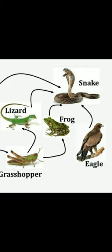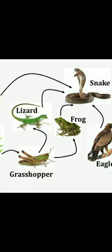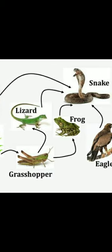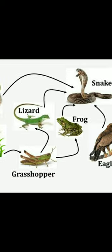An insect feeding upon the leaves of various plants can be the prey for many other organisms. An insect is the prey for many animals like frog, lizard, and grasshopper. If this is shown in a figure, it will indicate a web instead of a linear food chain — such an intricate network is called a food web.